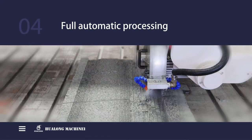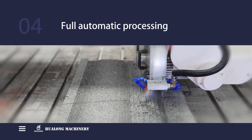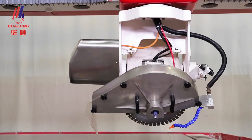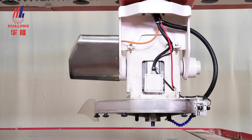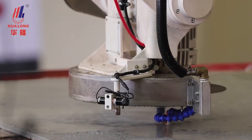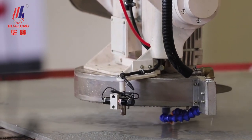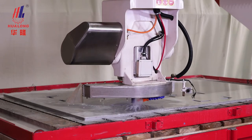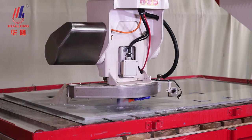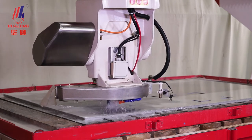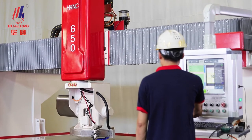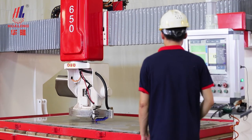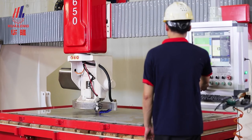Step 4: Full automatic processing. In this process, the user can adjust the cutting speed according to the hardness of the stone. The operation is flexible and convenient.